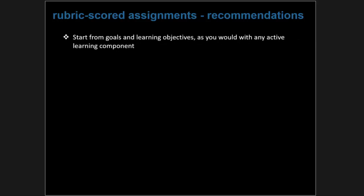Now that you've seen a rubric-scored assignment, here are some recommendations when creating your own. First, as with any assessment or assignment, start from goals and learning objectives. You want to measure your learning objectives — that's the whole point of assessment. Make sure those learning objectives support your course goals, and make sure your assessments are designed to generate evidence that students have mastered those learning objectives.